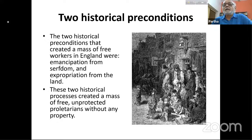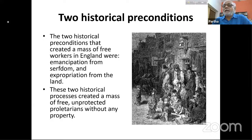Two historical preconditions created this mass of free workers in England: emancipation from serfdom — so the dependent condition of laborers is gone, serf peasants are now on their own — and expropriation from land. Some former serfs did manage to get their own land, but in time they were expropriated, thrown out. This creates a mass of free, unprotected proletarians without any property.